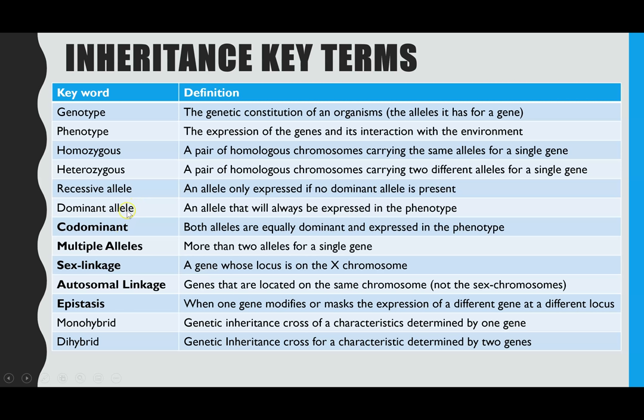Monohybrid and dihybrid inheritance refer to how many genes you're considering at a time in a genetic cross. Monohybrid is what you would have covered at GCSE — it's when you look at the inheritance of one gene at a time. Dihybrid is new at A-Level and is when you look at the inheritance of two genes at the same time.